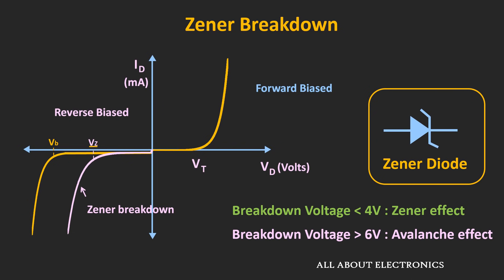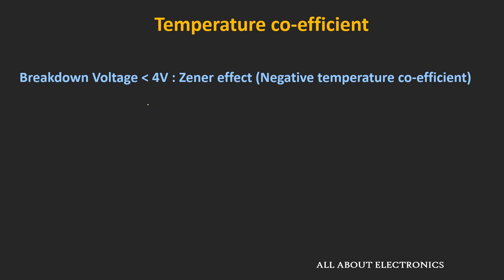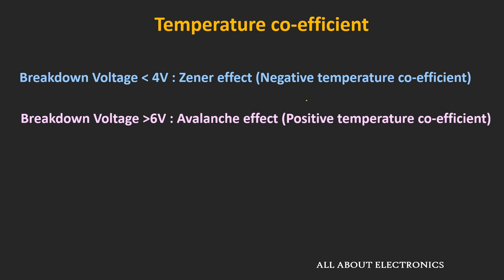Before ending this video, let us see the effect of temperature on these two breakdown mechanisms. For diodes where the Zener breakdown effect is predominant, the temperature coefficient of breakdown voltage is negative, meaning that as the temperature increases, the breakdown voltage will reduce. On the other hand, for diodes where the avalanche effect is predominant, the temperature coefficient of breakdown voltage is positive, meaning that as the temperature increases, the breakdown voltage will increase.